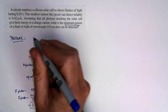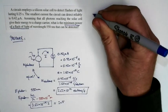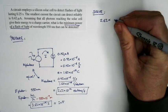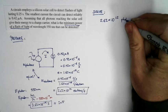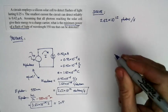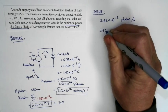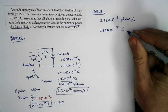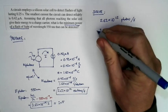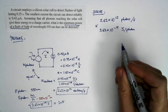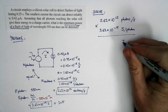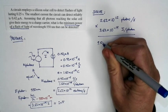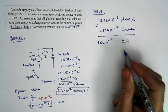We're ready to calculate the minimum power of a flash of light. We know that each second there are 2.62 times 10 to the 12th photons per second, and each photon carries an energy of 3.62 times 10 to the negative 19th joules. Multiplying photons per second times joules per photon gives joules per second. Working that out, we get 9.5 times 10 to the negative 7th joules per second.